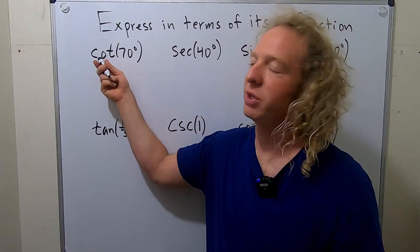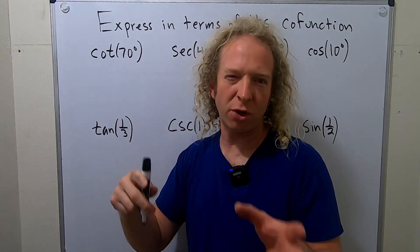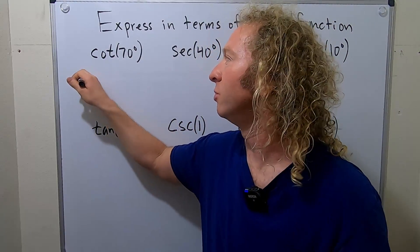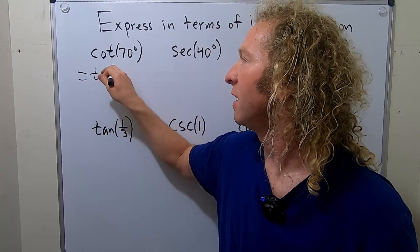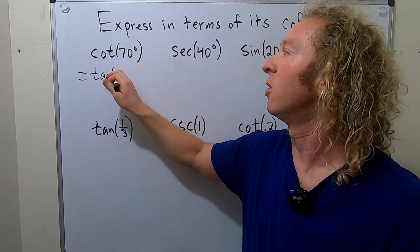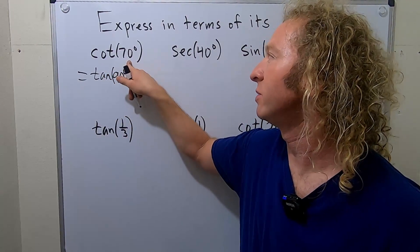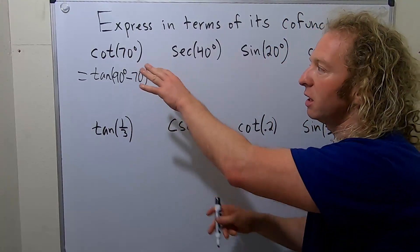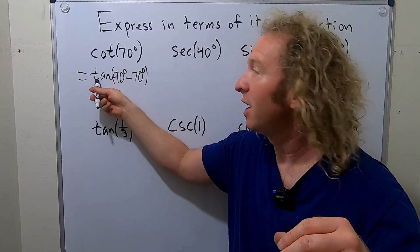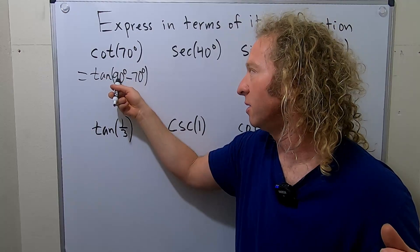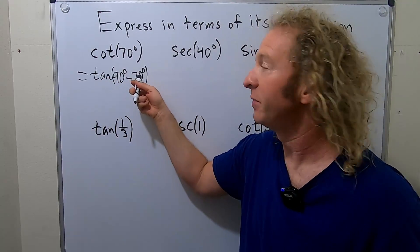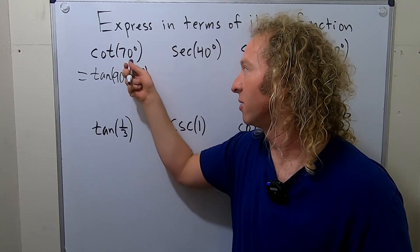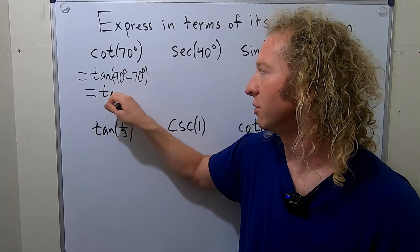So think about cotangent — cotangent is the co-function for tangent. This is in degrees, so it's always going to be equal to tangent of 90 minus whatever you see here, so minus 70. Its co-function is tangent, and because it's in degrees you put a 90, then subtract the angle. So it'll be tangent of 20 degrees.